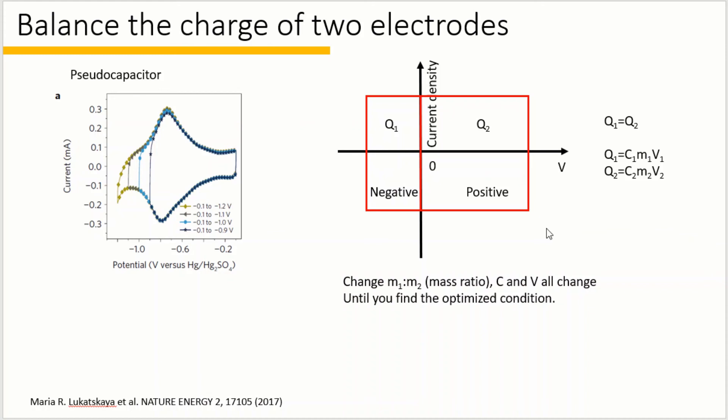So what can we do? We will actually balance the charge. That is because the charge of the positive and negative electrode should always be the same for the same cell, q1 equals q2. So if we change the mass ratio m1 to m2, then because q1 equals q2, the capacitance and voltage will all change. Usually I will try several ratios until I find v1 close to v2.